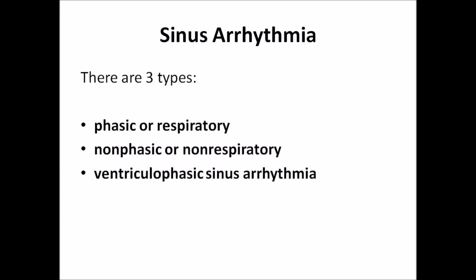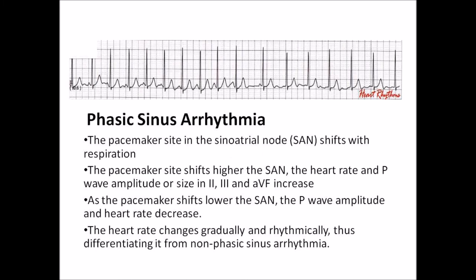There are three types of sinus arrhythmia: phasic respiratory, non-phasic or non-respiratory, and ventriculophasic sinus arrhythmia. With phasic sinus arrhythmia, the rate is dependent on the respiratory cycle, increasing with inspiration and decreasing with expiration. The pacemaker site in the sinoatrial node shifts with respiration — shifting higher increases the heart rate and P wave amplitude in leads 2, 3, and AVF; shifting lower decreases both. The heart rate changes gradually and rhythmically, differentiating it from non-phasic sinus arrhythmia.